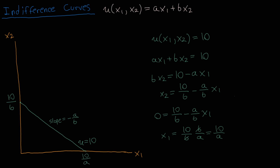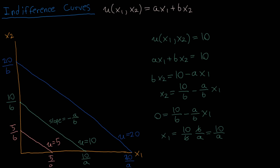Let's draw a few more indifference curves. The indifference curve where utility equals 20 has a vertical intercept of 20 over b and a horizontal intercept of 20 over a. The indifference curve where utility equals 5 has a vertical intercept of 5 over b and a horizontal intercept of 5 over a. You can see the pattern for how these intercepts are constructed — and all these indifference curves have a slope equal to negative a over b.